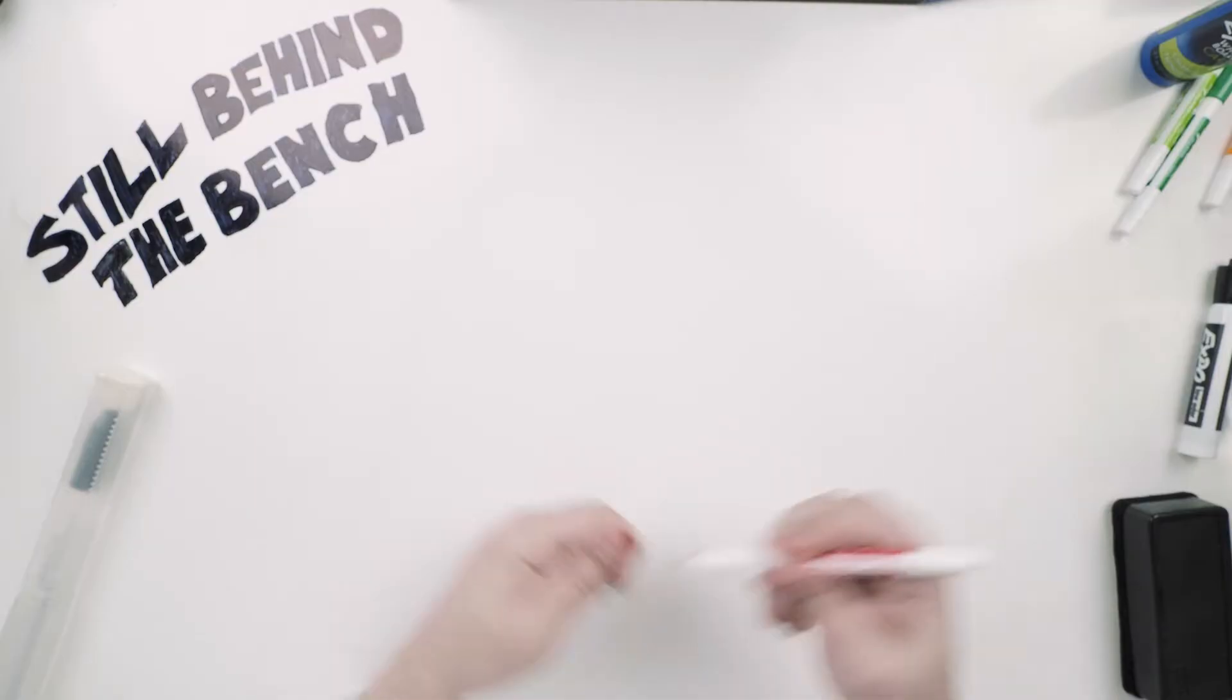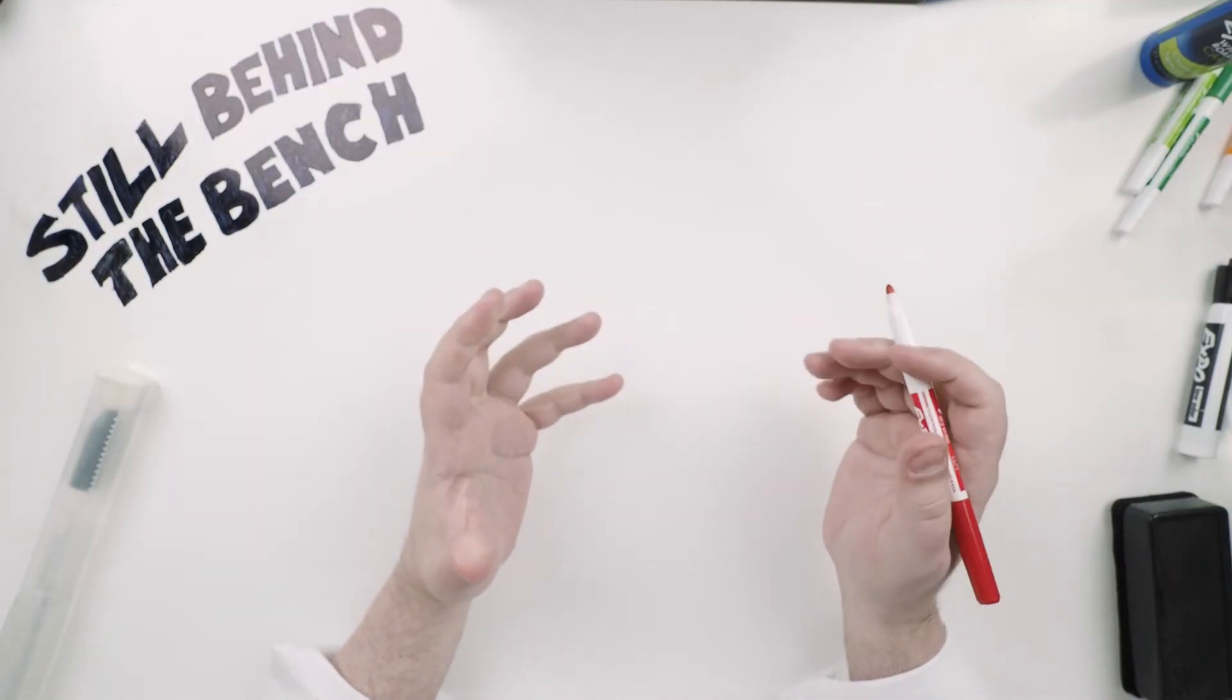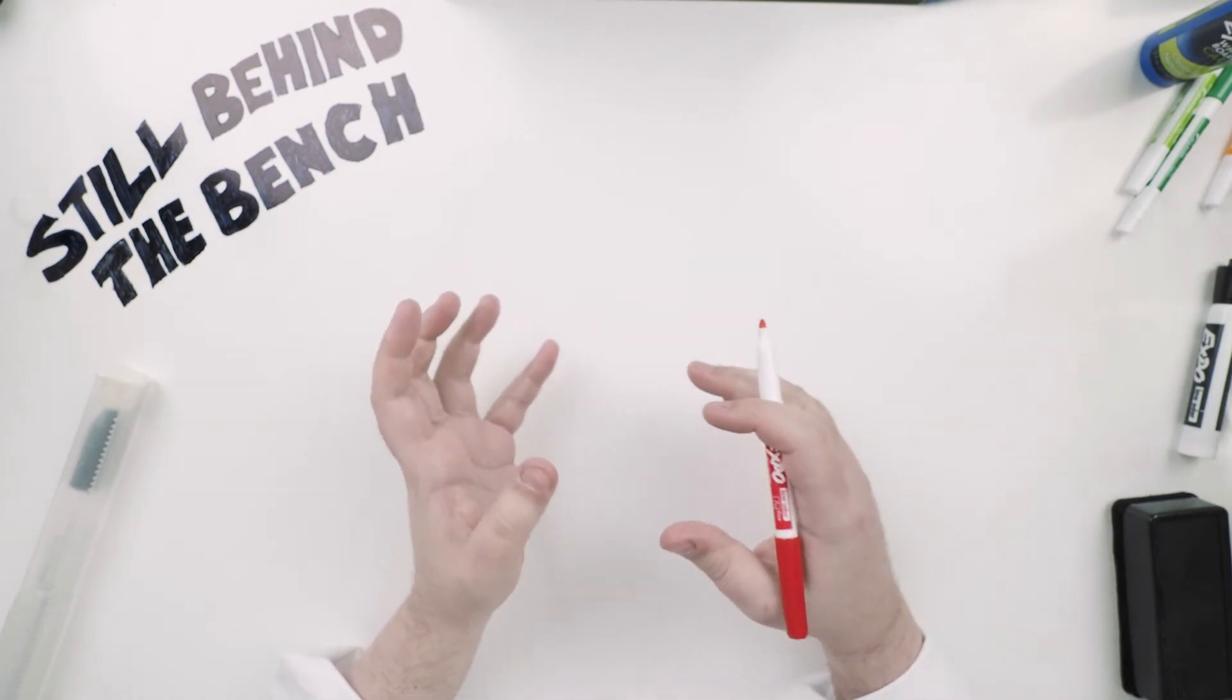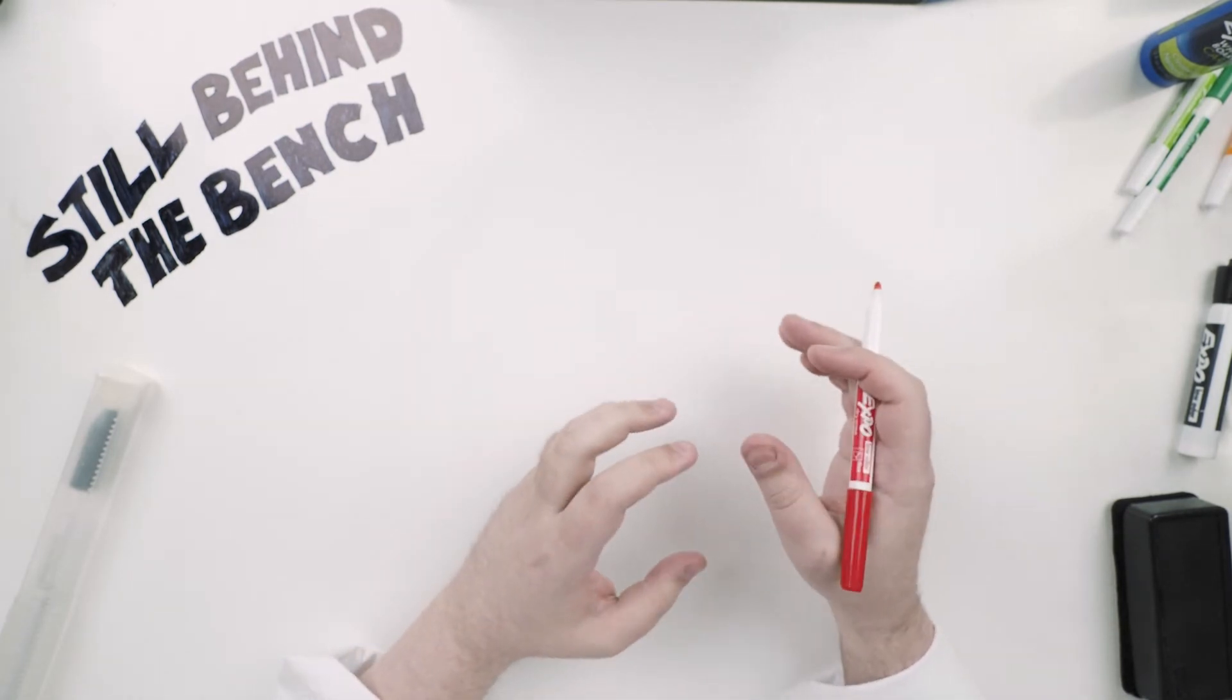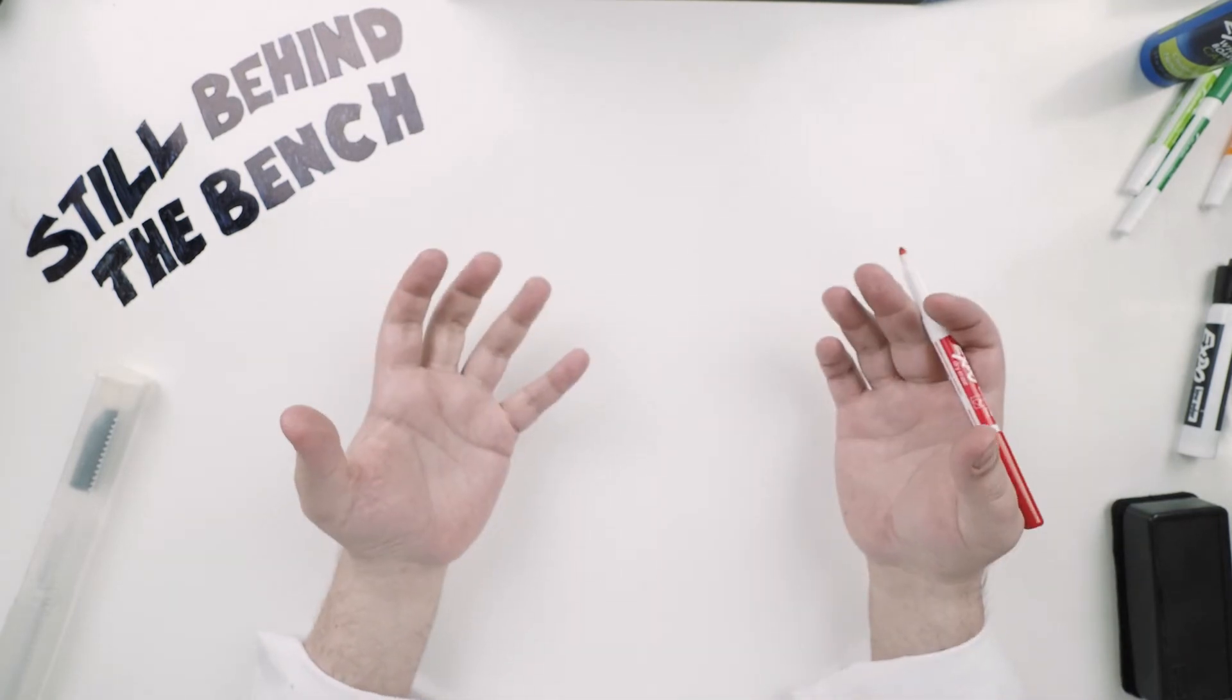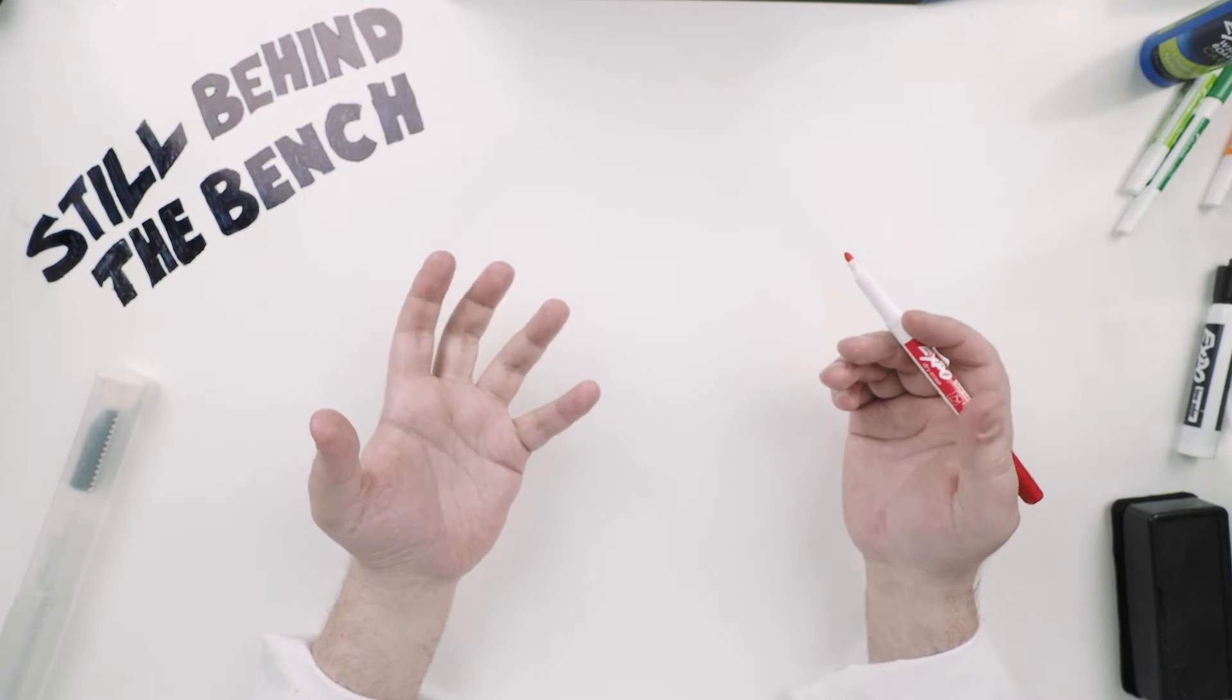So what else can we learn about specific gravity? Well we can learn how to sum it together. Let's go to the bench to see how. So here we are at the bench. If you're adding a dry ingredient directly into your mash or wash and you know how many gravity points your ingredient is going to add when mixed into that volume of water you can just add it on to what the specific gravity already is.